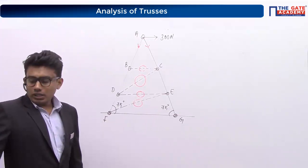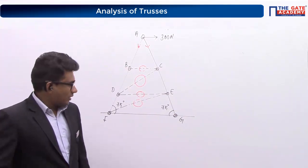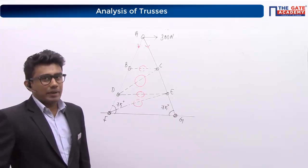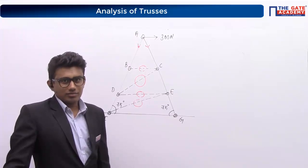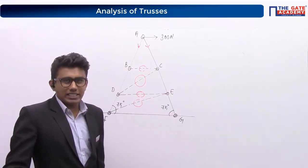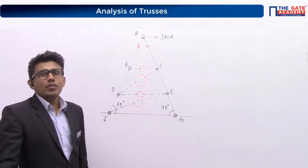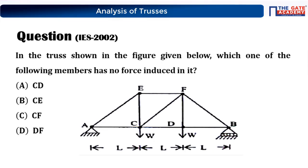A student asks whether joint G is a pin joint or roller. It doesn't matter — since the question states it is an idealized plane truss, you consider it as a pin joint. Now moving to the next IES question: which of the following members has no force induced in it? Options are: (A) CD, (B) CE, (C) CF, (D) DF.